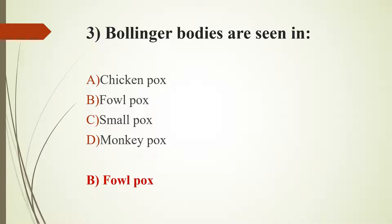Fowl pox, also known as avian pox, is caused by a DNA virus of the genus Avipoxvirus, which belongs to the family Poxviridae. Bollinger bodies are aggregates of specific proteins found in neurons, tissue cells including RBCs, bacteria, viruses, and plants. In virology, they are structures with distinct size, shape, location, and staining properties demonstrable from virus-infected cells — essentially aggregates of viral particles.